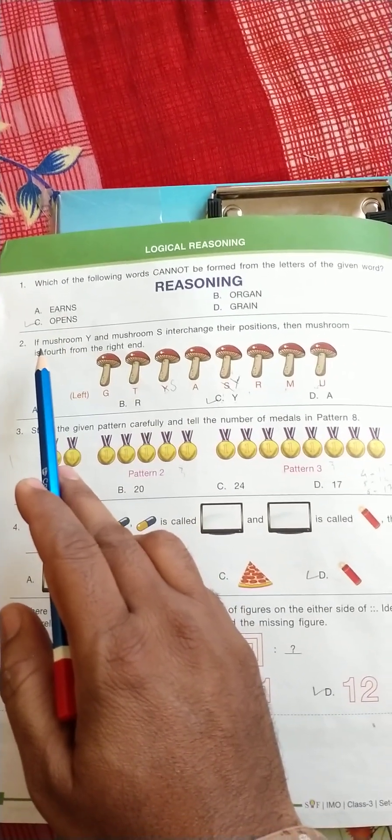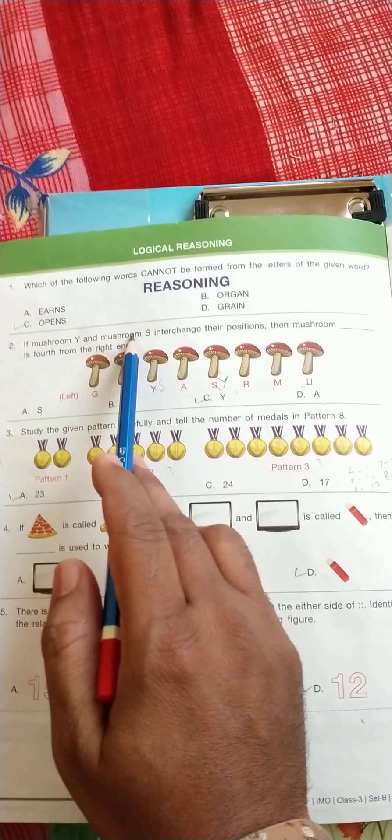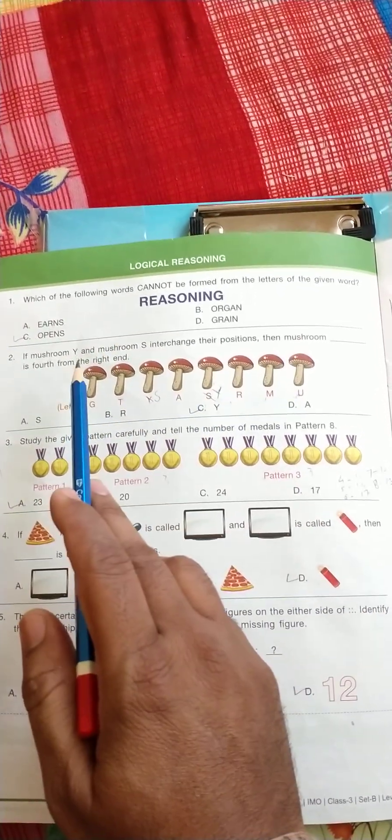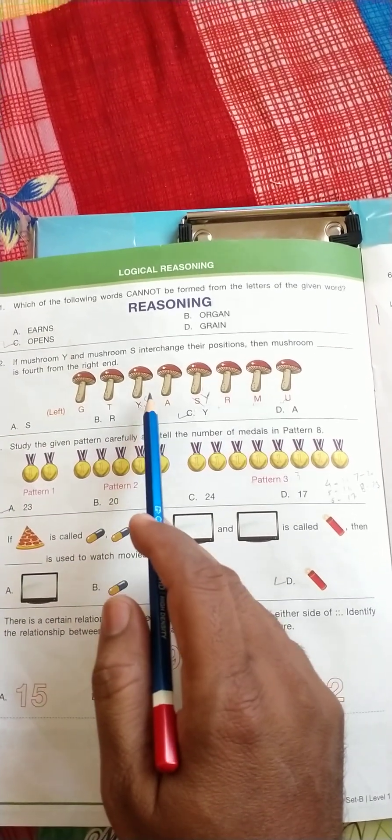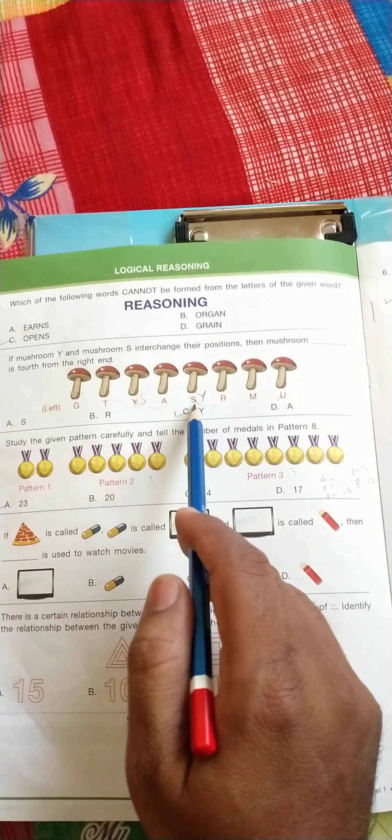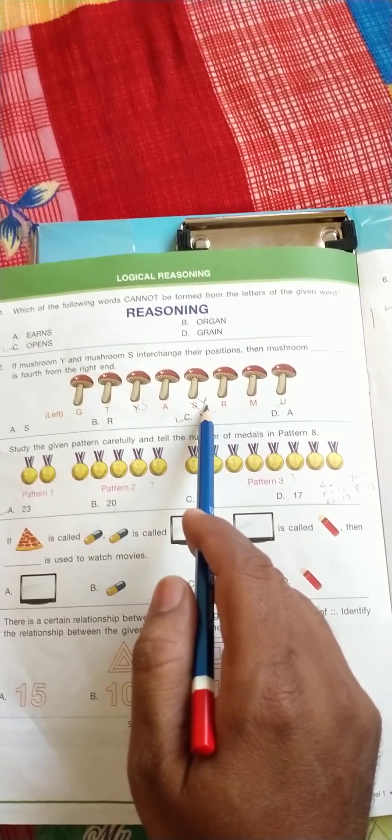Question number second: if mushroom Y and mushroom S interchange their position, then mushroom is fourth from the right end. So just we interchange, we can write here S and in place of S we write Y.